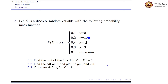Let us look at the fifth question in week 8. X is a discrete random variable with the following probability mass function: P(X=x) equals 0.1 for x=0, 0.2 for x=1, 0.4 for x=-2, 0.3 for x=3, and 0 for all other values. They are asking us to find the PMF of the function Y = x² + 2.